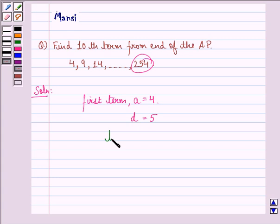Now we see that T_n, that is the nth term, is equal to a plus (n minus 1) times d. Or we can say 254 equals 4 plus (n minus 1) times 5.